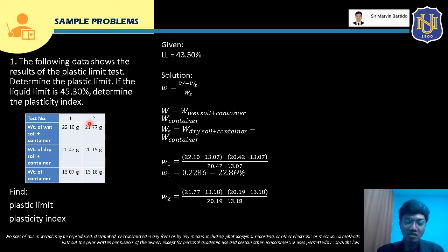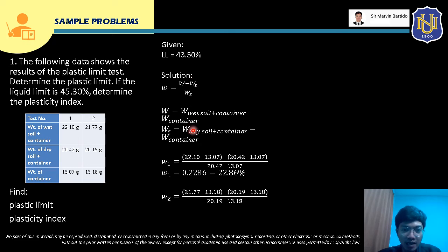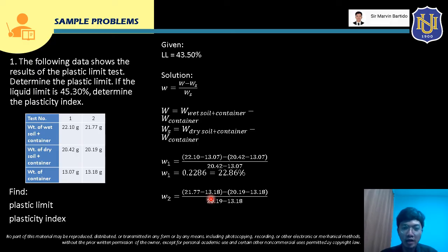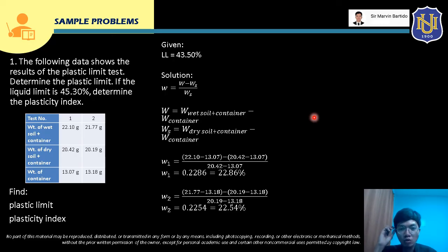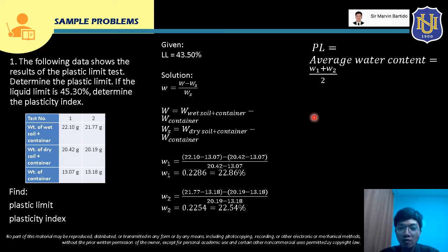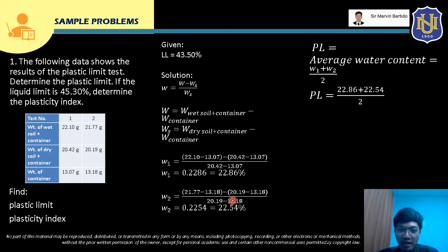Now for test number two, let's just solve this. The weight of wet soil is 21.77 minus weight nung container which is 13.18, minus yung weight nung soil solid natin ay weight nung dry soil plus container 20.19 minus weight nung container — same lang dito. So let's input this in our calculator: 21.77 minus 13.18 minus quantity (20.19 minus 13.18) over 20.19 minus 13.18. Ito ay 0.2254 or 22.54%.